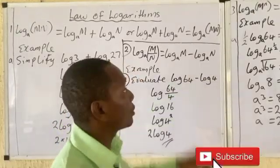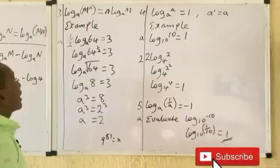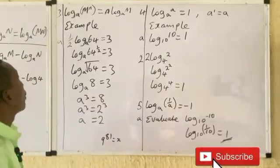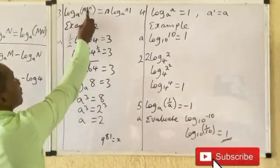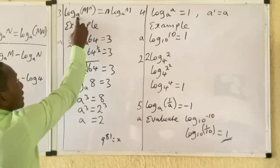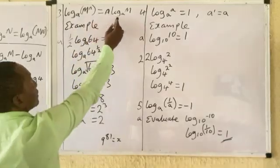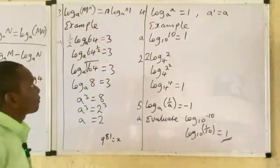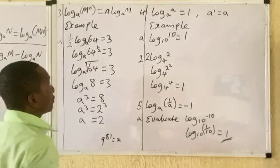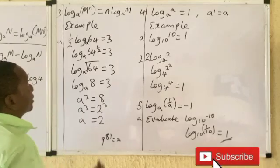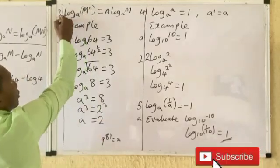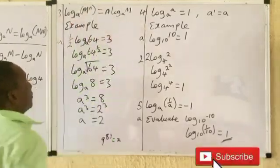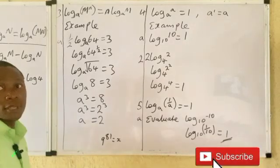The third law: log base a of m to the power n equals n log base a of m. The power is brought to the front as a coefficient. I used this format in the previous question as well.